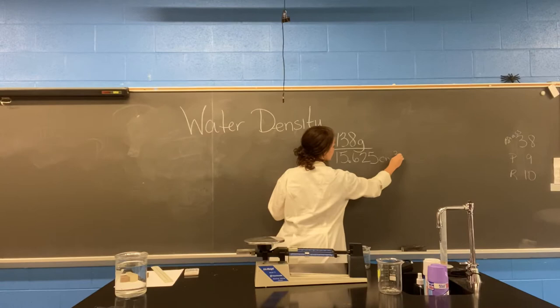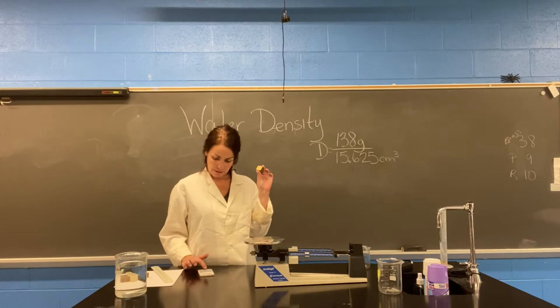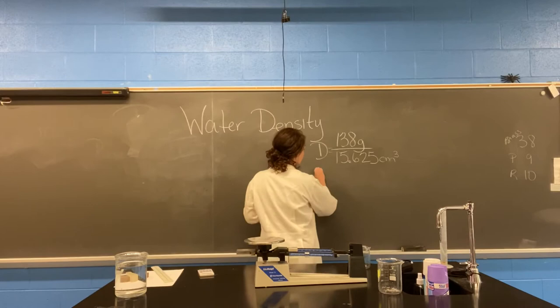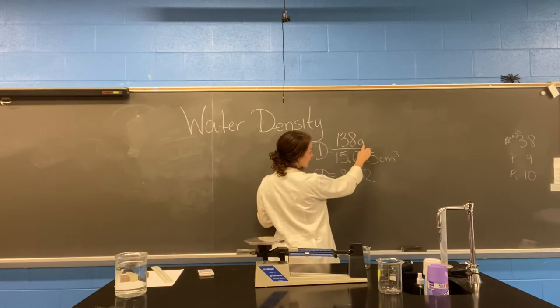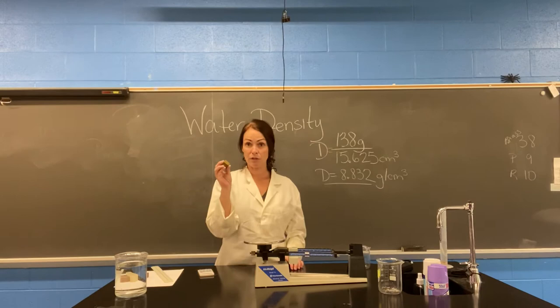In order to find the actual density, we divide 138 by 15.625 and we got 8.832. We can't just divide grams by cubic centimeters, so we get grams per cubic centimeter. This brass block has a density of 8.832 — that's important.